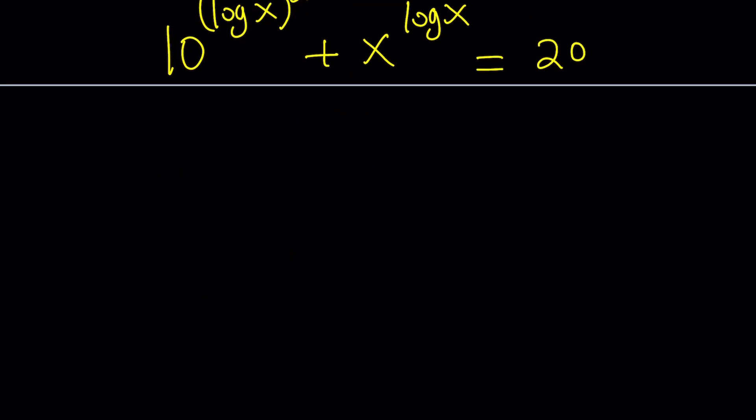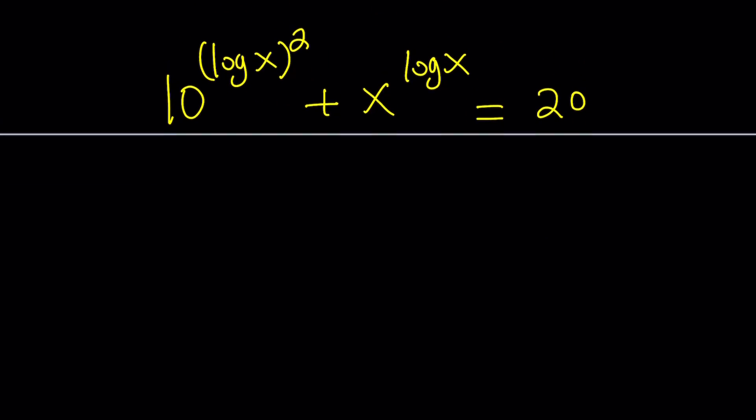Make sense? So, now, we're ready to apply this property. We can write this as 10 to the power log x to the power log x, because log x squared is just log x times log x. Isn't it?